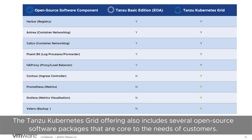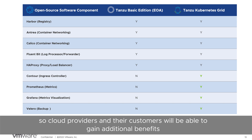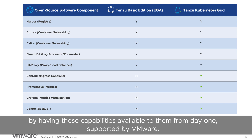The Tanzu Kubernetes Grid offering also includes several open source software packages that are core to the needs of customers. These capabilities are a superset of those that were available in Tanzu Basic, so cloud providers and their customers will be able to gain additional benefits by having these capabilities available to them from day one, supported by VMware.